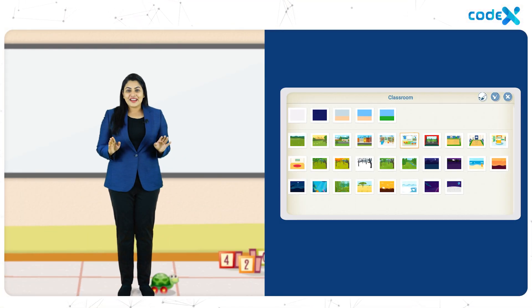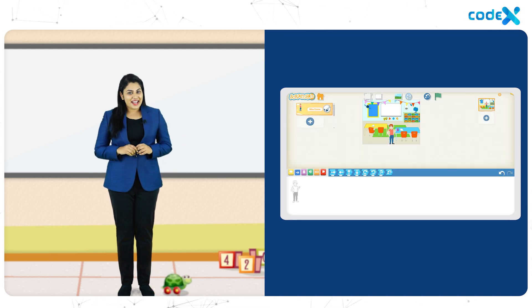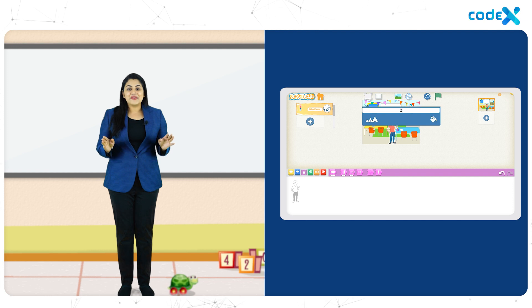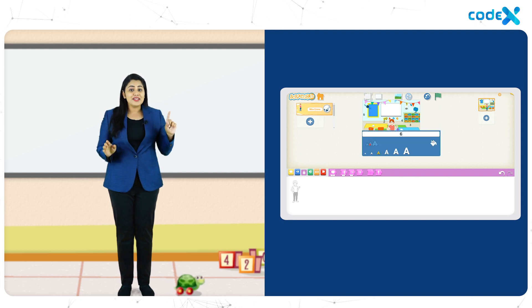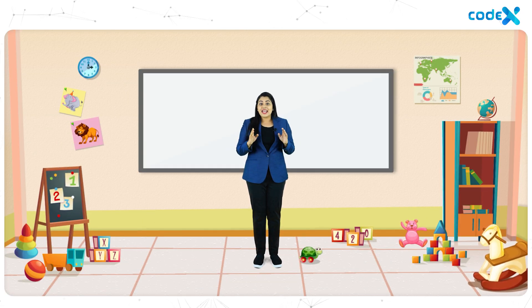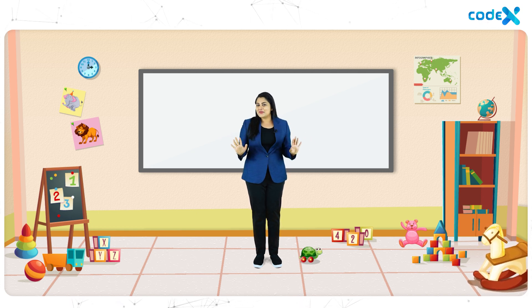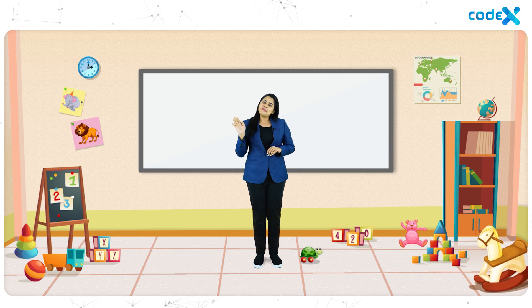Today's session was really fun, wasn't it? We created a classroom background, met our teacher Miss Emma, and finally added the numbers from 1 to 10 to the classroom background. In the next session, we will be adding 10 different characters to hide these numbers. The aim of our game is to find the hidden numbers. So stay connected with Scratch Junior to have lots more fun. Until then, bye!